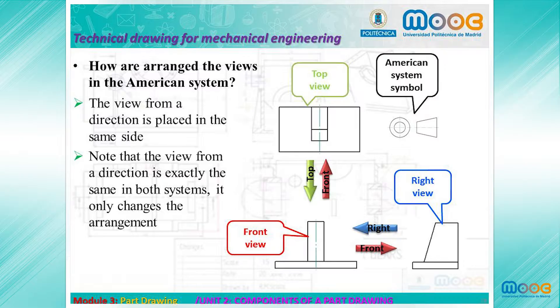In the European System, the Top View is placed below the Front View, and the Right View is placed to the left of the Front View. In the Title Block of the Drawing, we have to place the symbol of the arrangement system used.